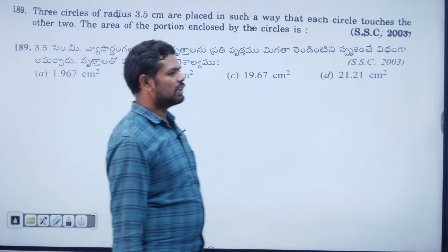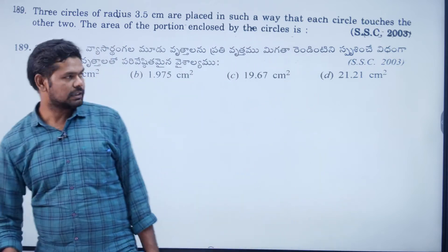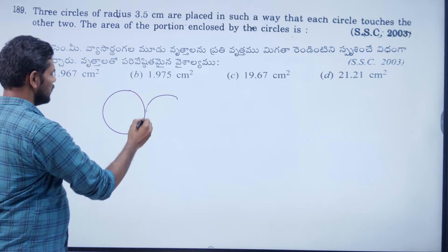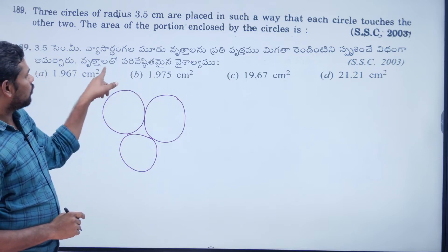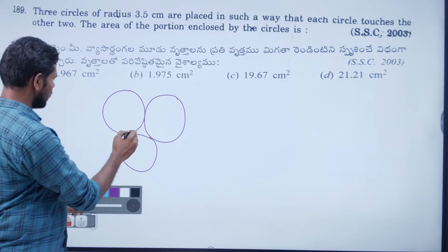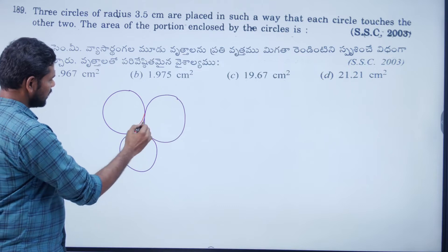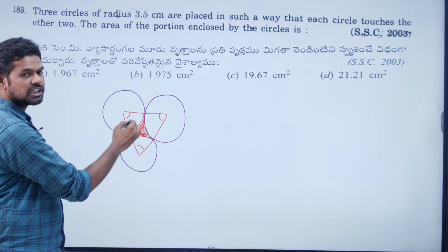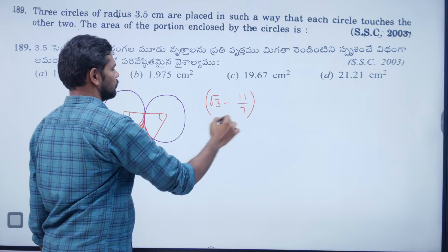Three circles of radius 3.5 cm are placed so that each circle touches the other two. The centres form an equilateral triangle. The area of the portion enclosed by the circles equals the equilateral triangle area minus the three sectors. Each sector angle is 60°, so three sectors together make a semicircle. The direct formula is: (√3 − 11/7) × r².